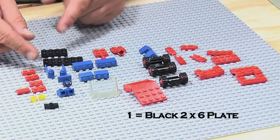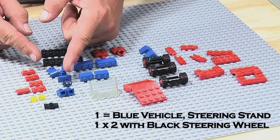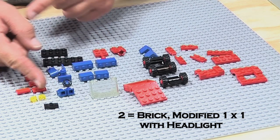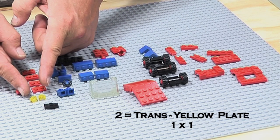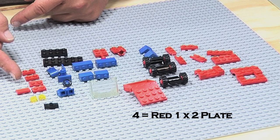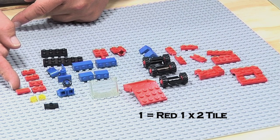2x4, 2x6, two door sections, steering wheel, two headlights, offset, transparent yellow, four 1x2s, plates, and a 1x2 flat.